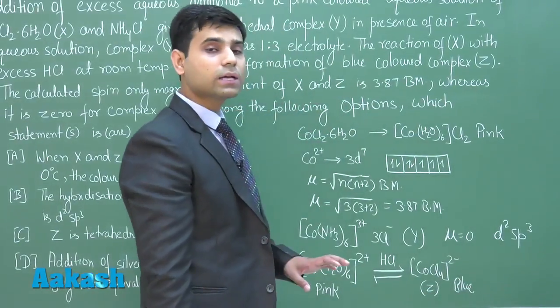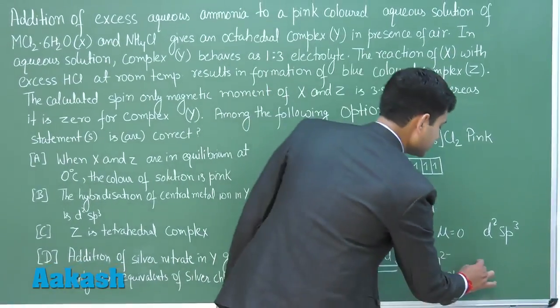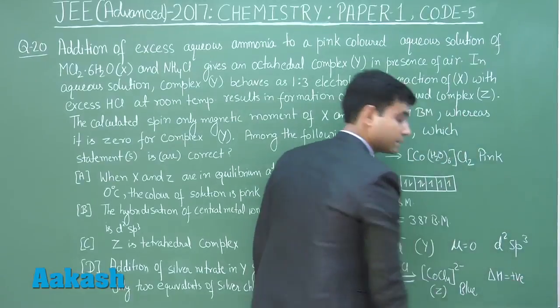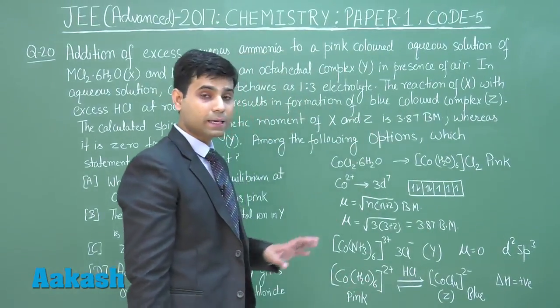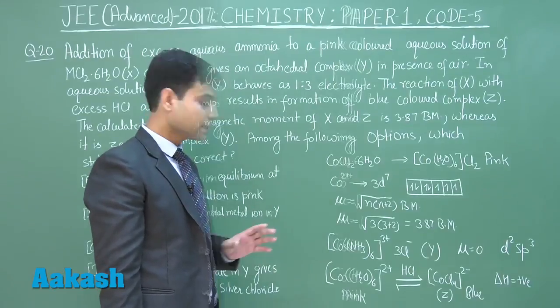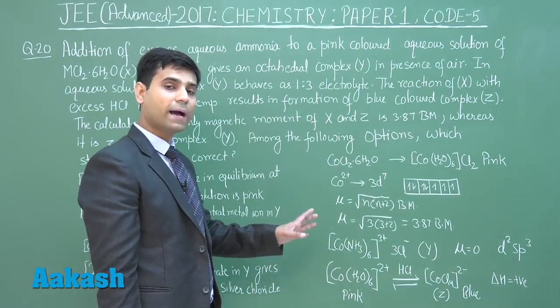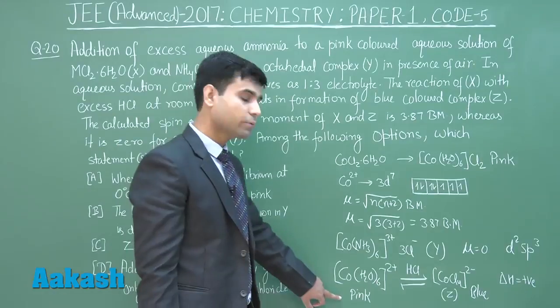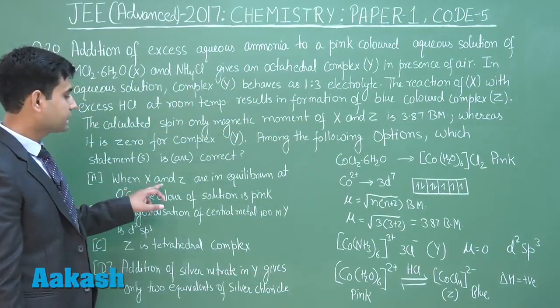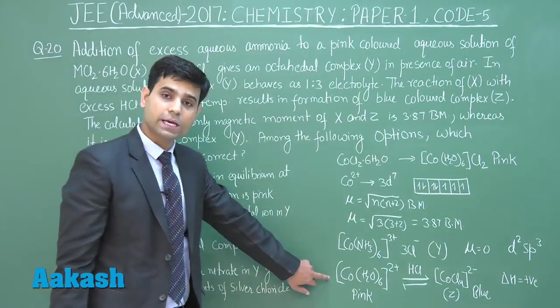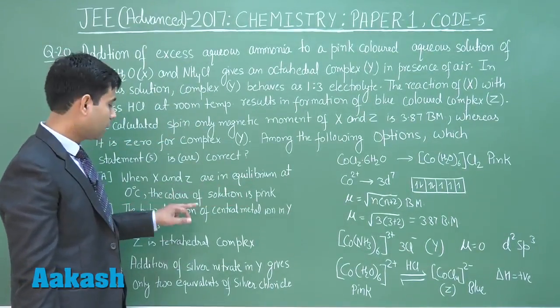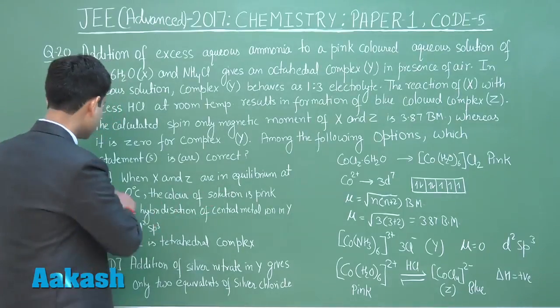The process is exothermic, delta H is negative. According to Le Chatelier's principle, when we decrease the temperature, the reaction will shift in backward direction towards pink color. Let's check statement A: when X and Z are in equilibrium at 0°C, the color of solution is pink. Absolutely correct statement.